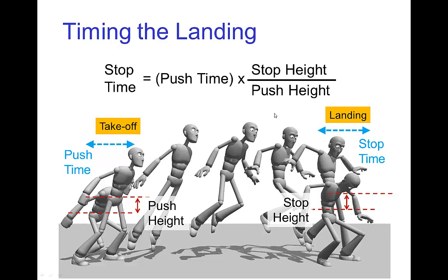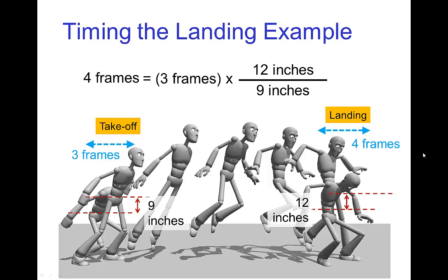The timing in the stop is related to the takeoff in the following way: the push time times the ratio of the heights gives you the stop time. For example, if we push off for nine inches and the takeoff is in three frames, and the landing has a slightly deeper crouch of twelve inches, then the timing of the landing will be proportionately longer — four frames on landing as opposed to three frames of push time.